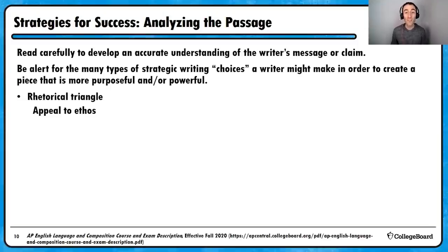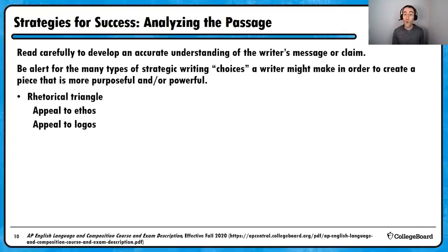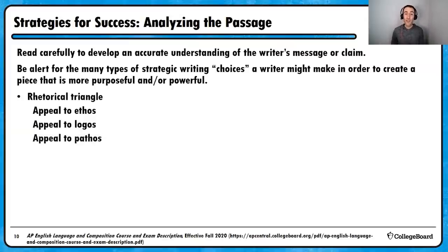The second point of the rhetorical triangle we might look out for is appeals to logos—typically when the author brings evidence to support an idea, whether statistics, data, a quote from a respected figure, or the author unpacking reasoning in support of a position. Generally, strong arguments have some logical basis for what they are trying to say. The third point in the rhetorical triangle is an appeal to pathos—our appeal to emotion, whether evoking strong positive emotions like hope, excitement, or happiness, or negative emotions like fear, anger, or outrage—any emotion that might move a person to act or respond in a certain way.